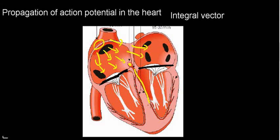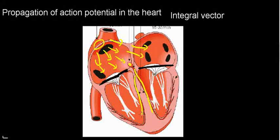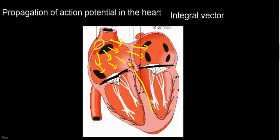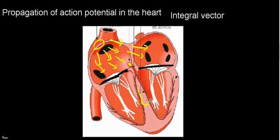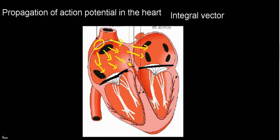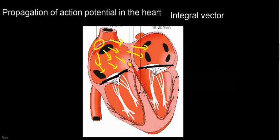Now we're going to have a very quick depolarization of the left and right bundle branches of the bundle of His. What we know from this is that the septal tissue is going to be depolarized from the left bundle of His.